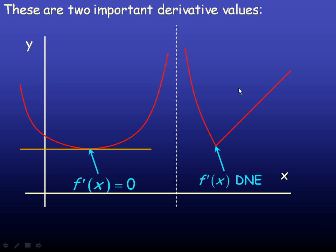Two very important derivative values are where the derivative is zero — for example, at a local minimum or local maximum point. Notice that the tangent line is horizontal at such a point, so the derivative is zero; the instantaneous rate of change there is zero. Places where there's a corner or a cusp are also of special interest in calculus. These are places where the derivative is undefined — the derivative does not exist at a corner or a cusp.